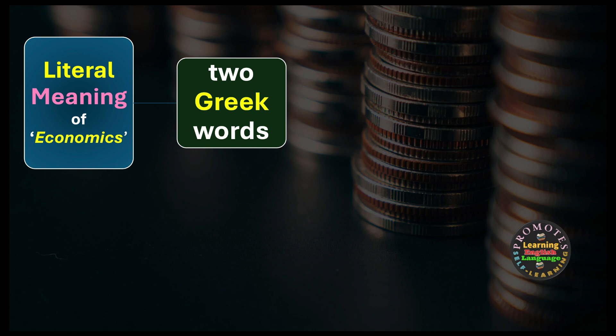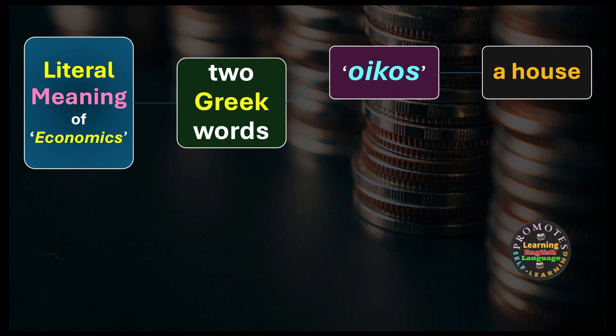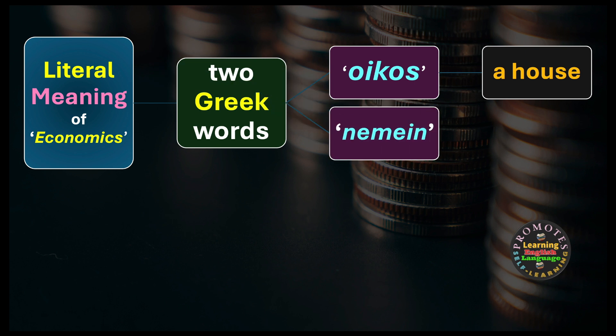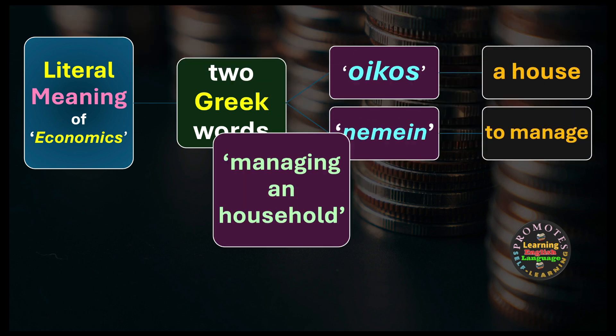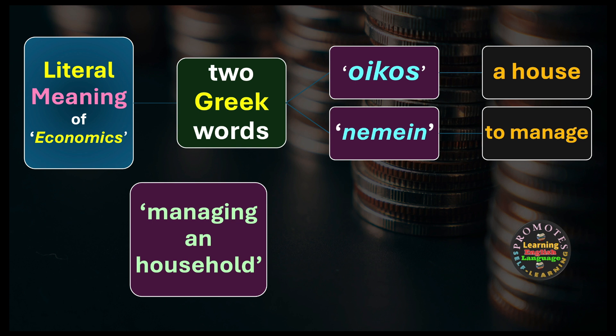The word economics comes from two Greek words. The first one is 'oikos', which means a house. The second one is 'nemein', which refers to to manage. Briefly, we can say economics is all about managing a household.